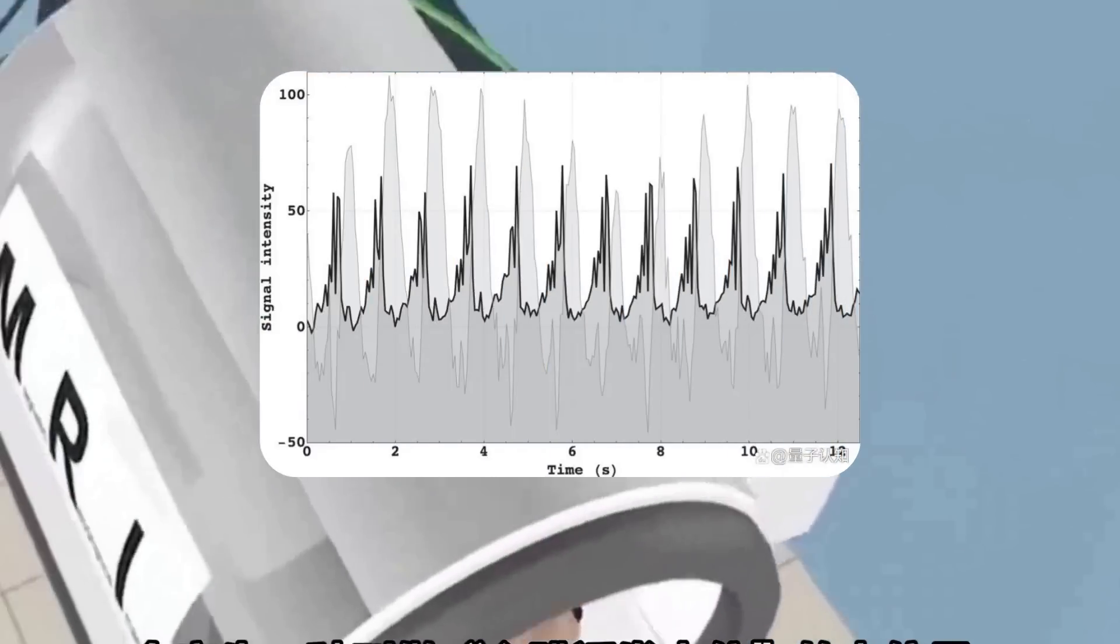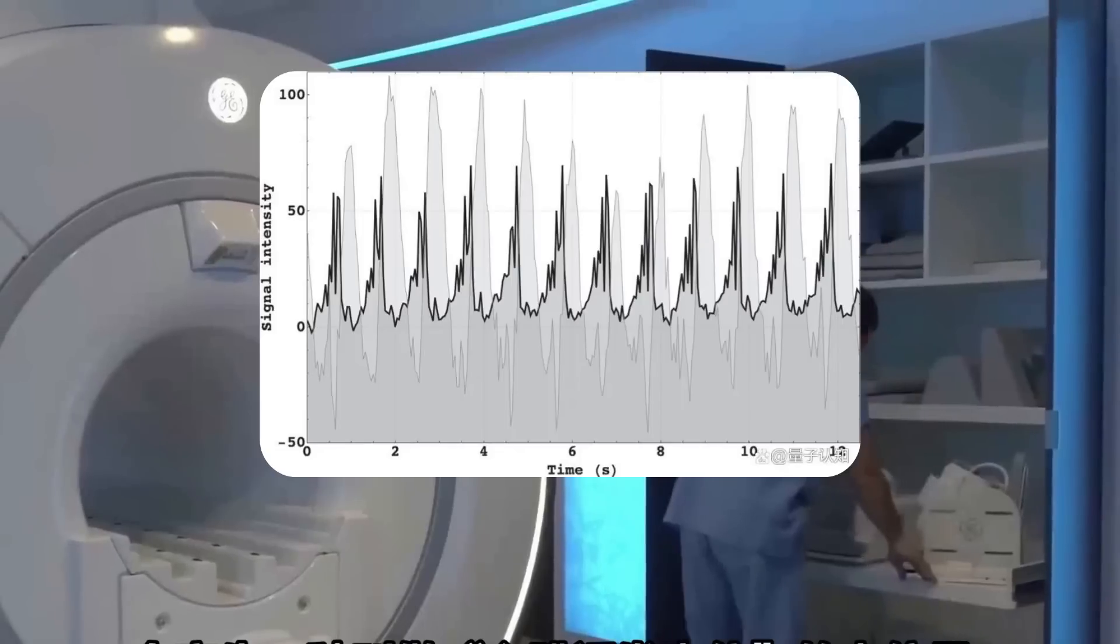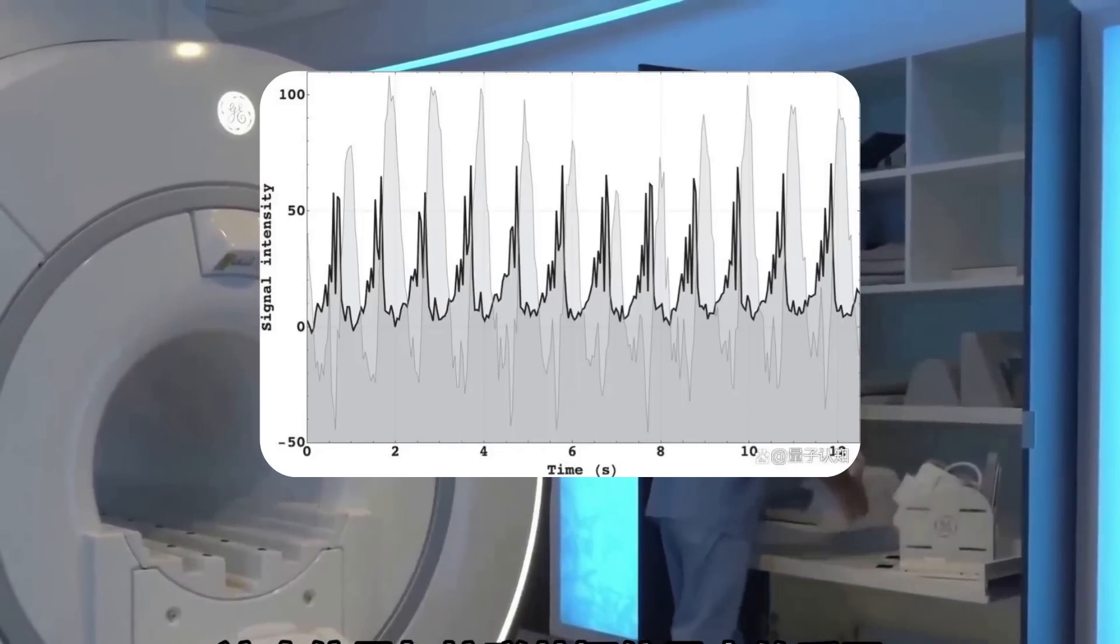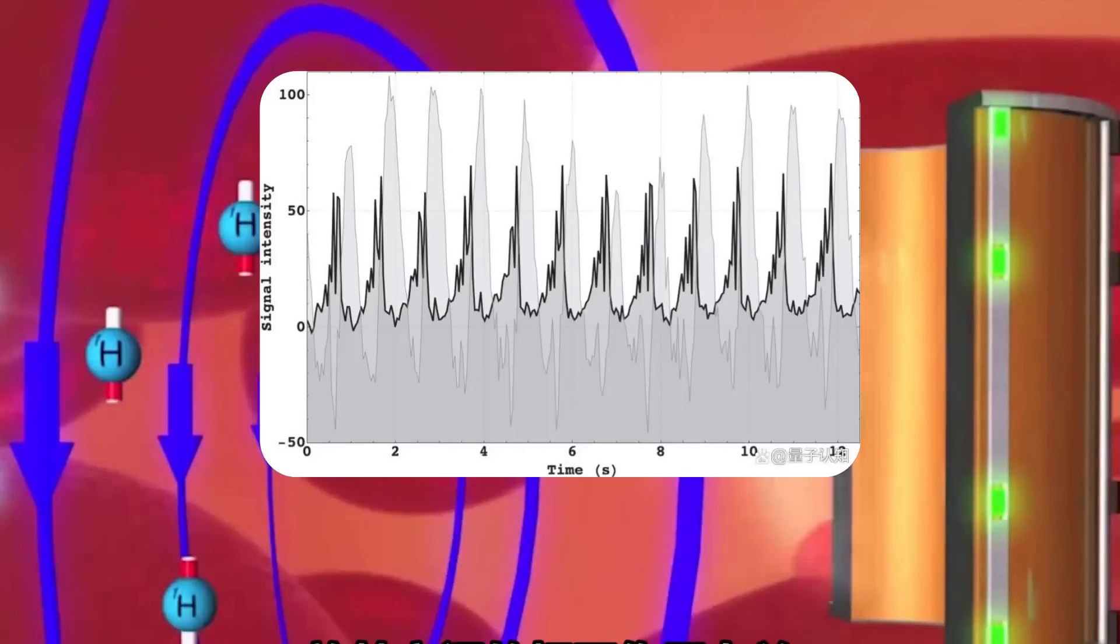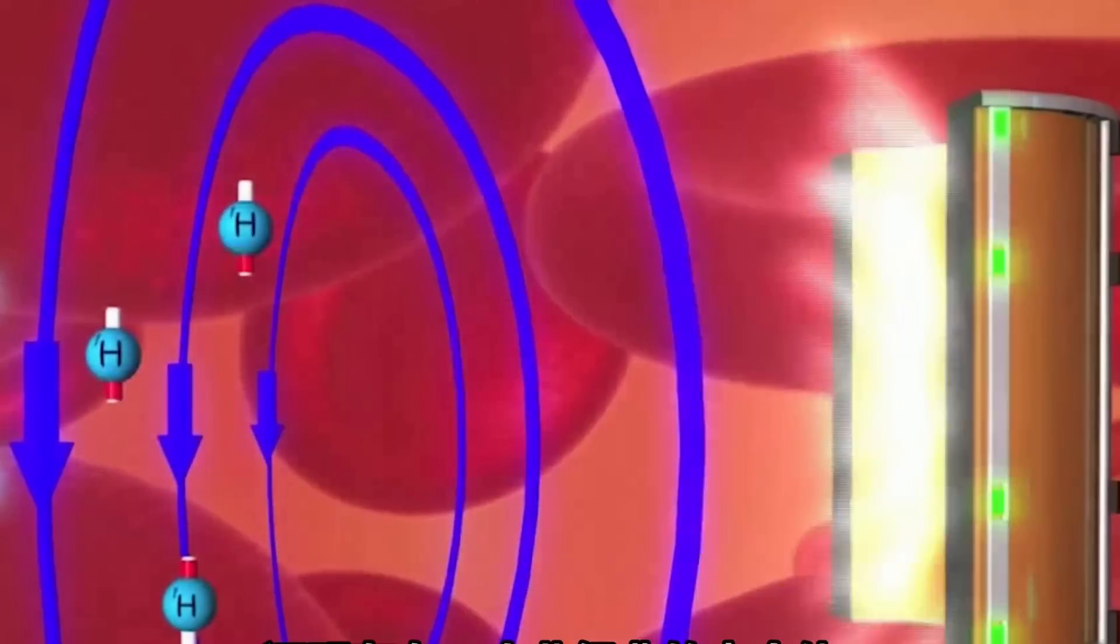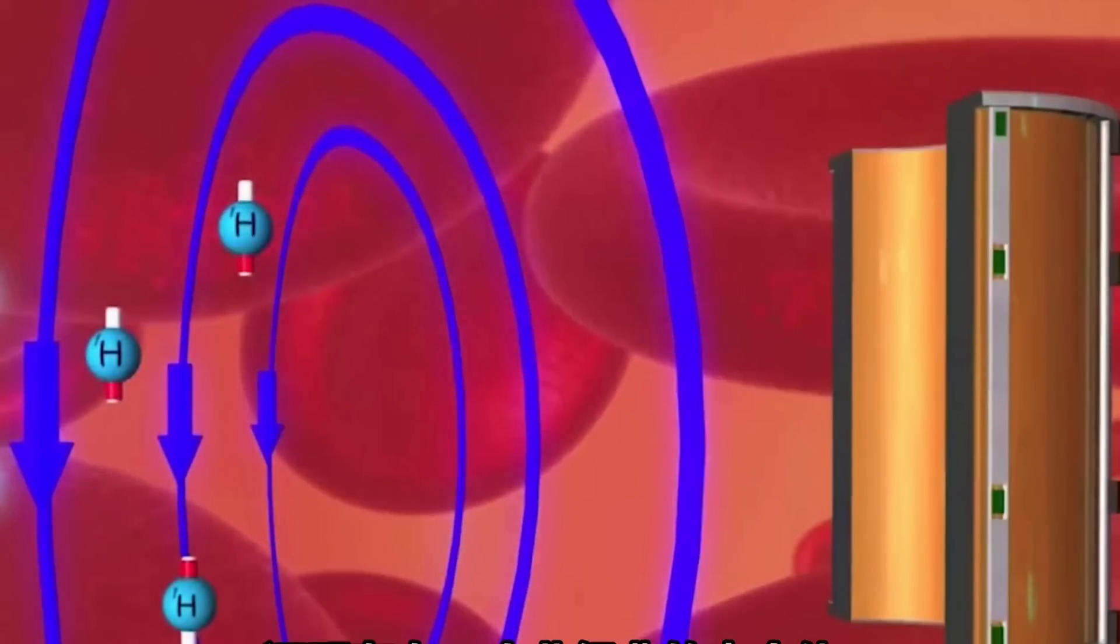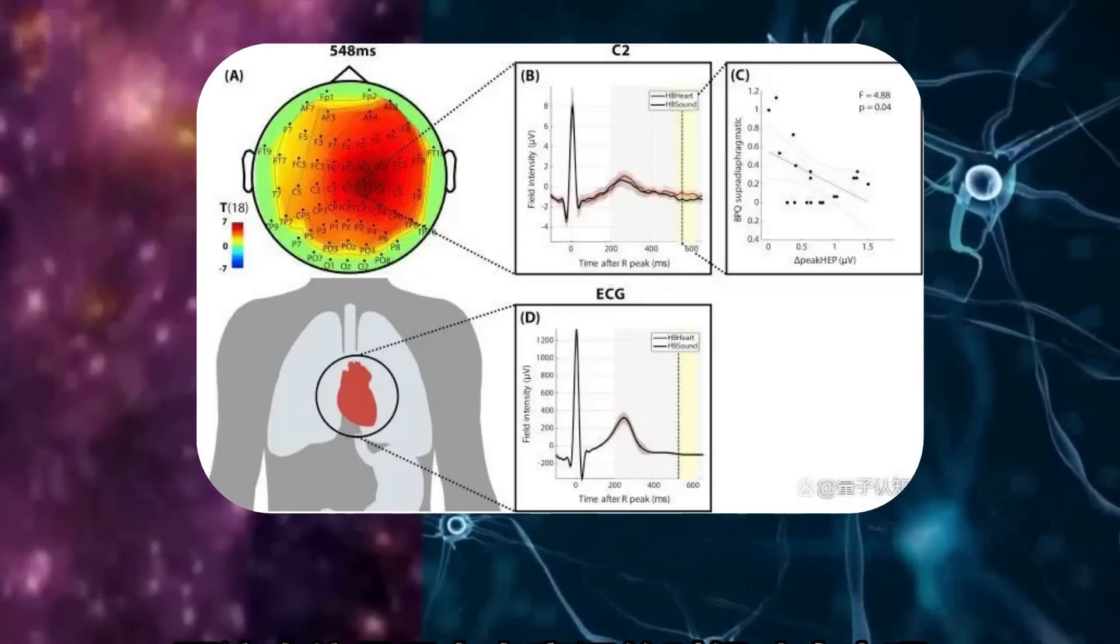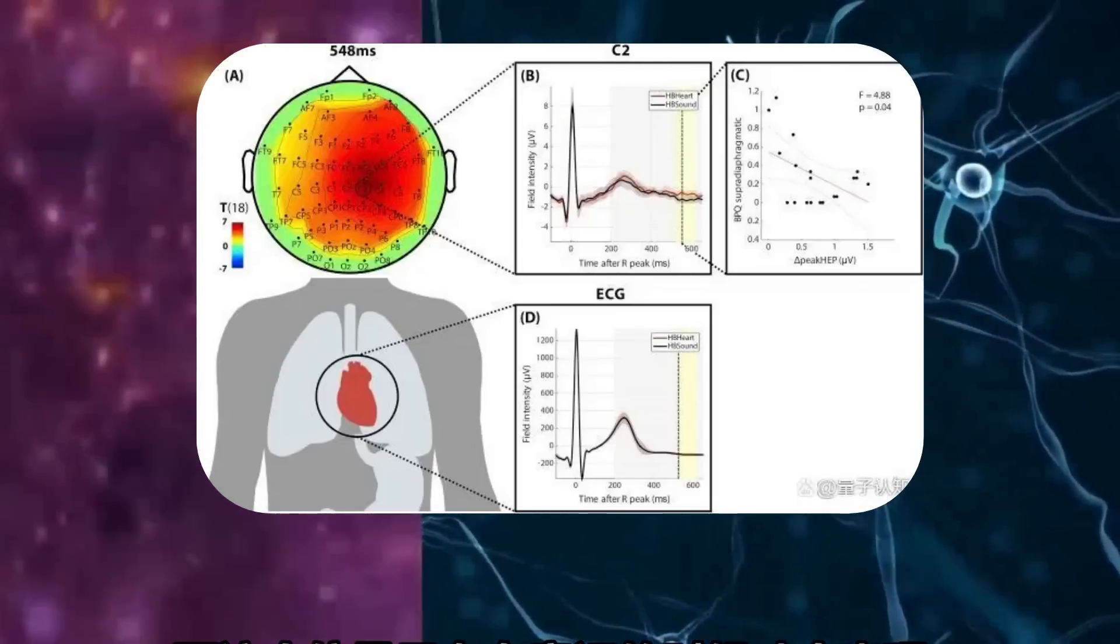The researchers found that every time the heart beats, an electric signal called a heartbeat-induced potential is generated. This signal is related to the interaction between the proton rotation in the MRI signal and may be the result of entanglement, proving the existence of a non-classical mediator.